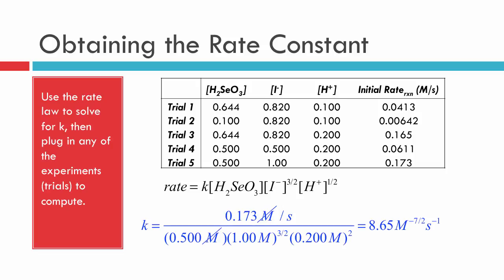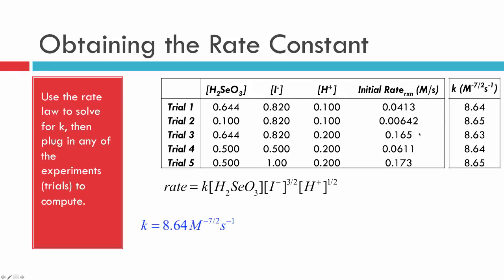On an exam, just pick any one trial and plug in to find k. However, in a real experiment the best approach is to calculate k for every trial and then average the values — here the average of five trials is 8.64. That gives a better result, but on an exam just choose one trial. Finding the rate constant and rate law from the method of initial rates is fundamentally just algebra, and these problems are worth 10 to 15 points, so it's well worth mastering.